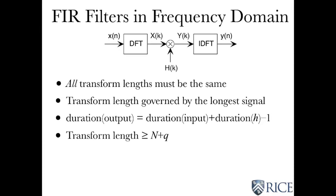All right. Now, here's where the subtleties come in of the FIR filters. All transform lengths have to be the same. It makes no sense to multiply an X times a capital H where these were taken with different length transforms.